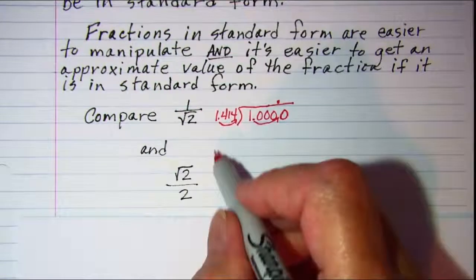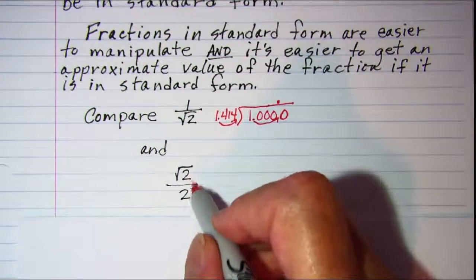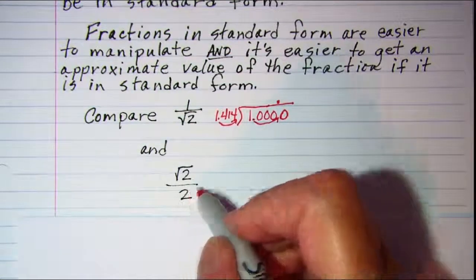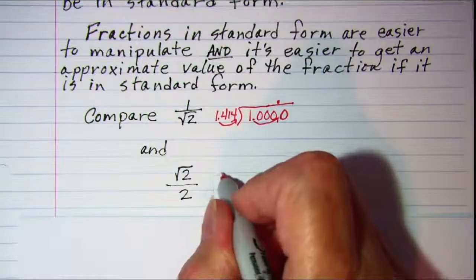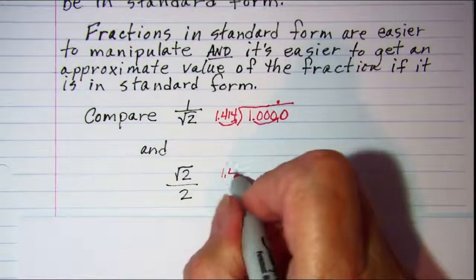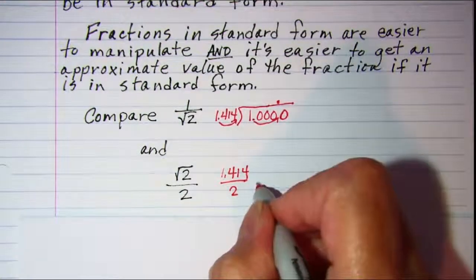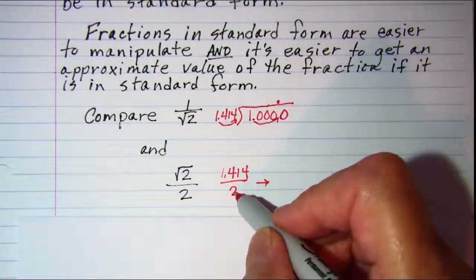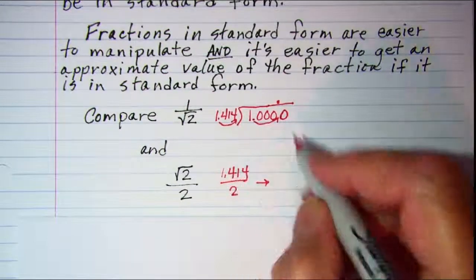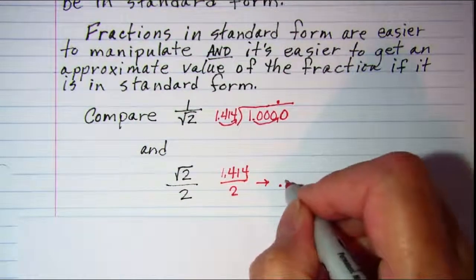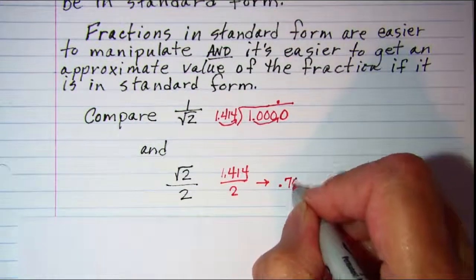Now if we were to get an approximate value for this fraction, we would just take 1.414 and divide it by 2, and we can see that that's easily done. 2 divides 14 seven times, so this would be 0.707.